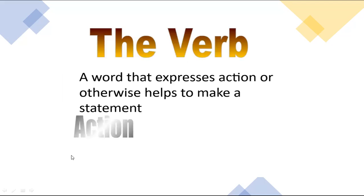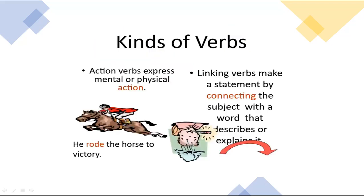Then we have the verb — a word that expresses action or otherwise helps make a statement. There are two types of verbs: action verbs and linking verbs. Action verbs express mental or physical action. Physical actions include things we do with our bodies like moving, exercising, and walking.